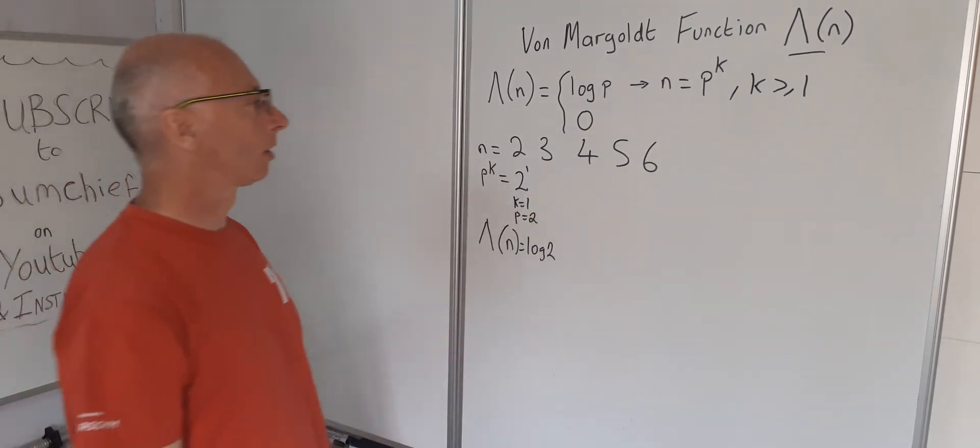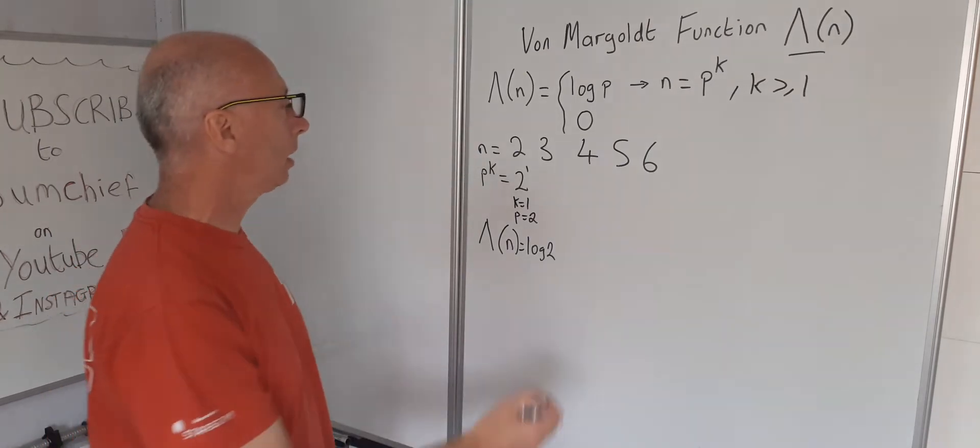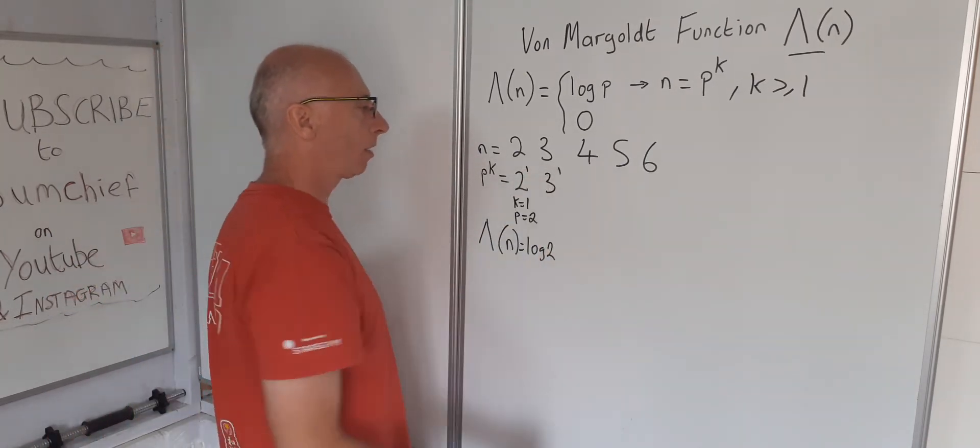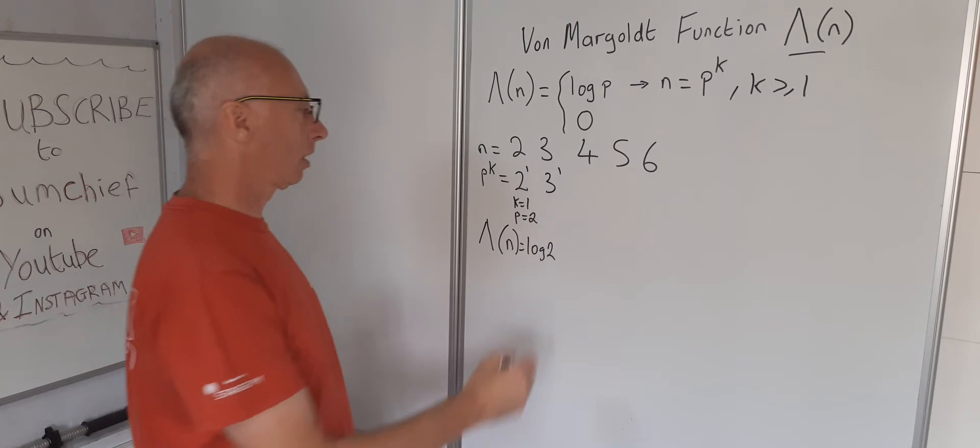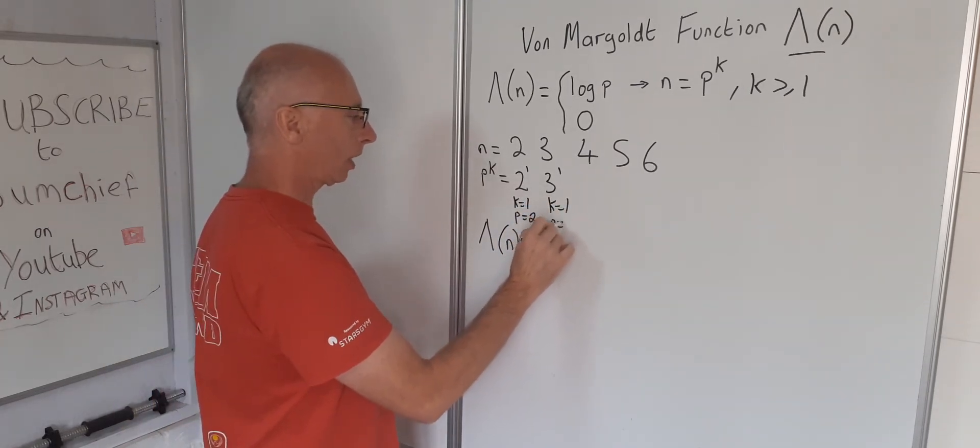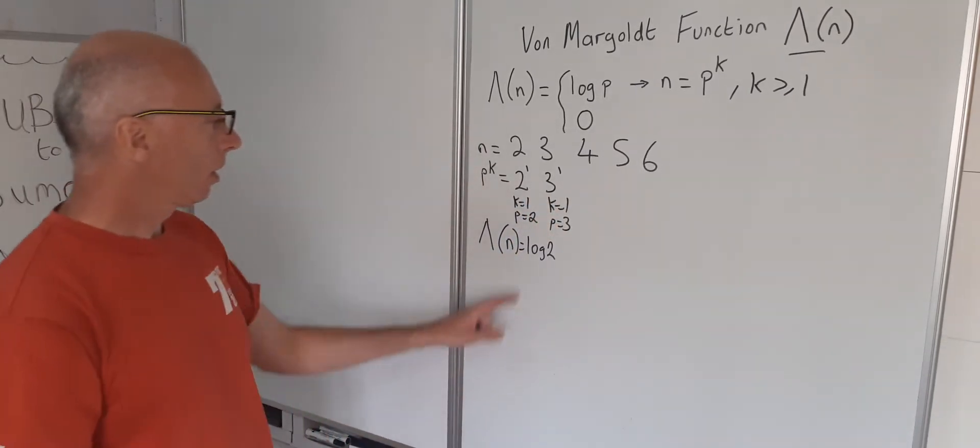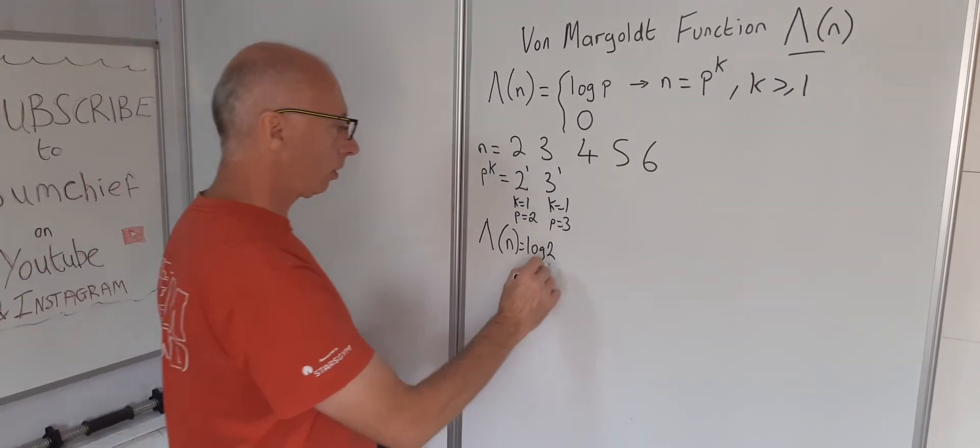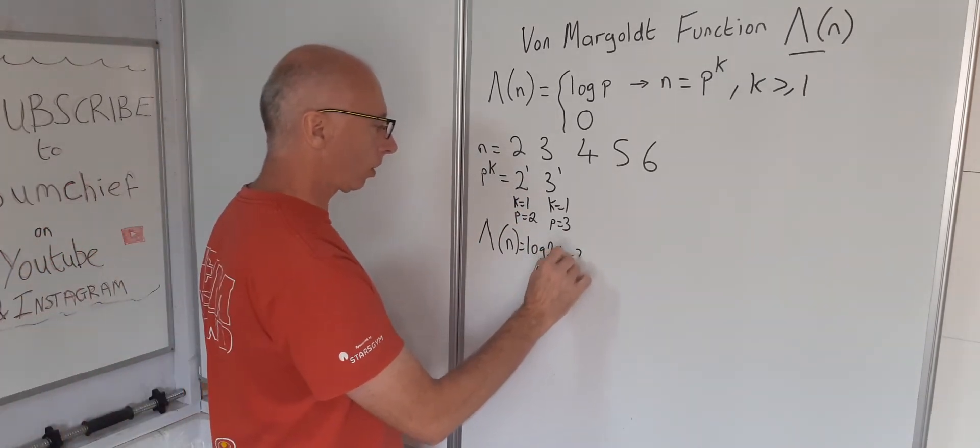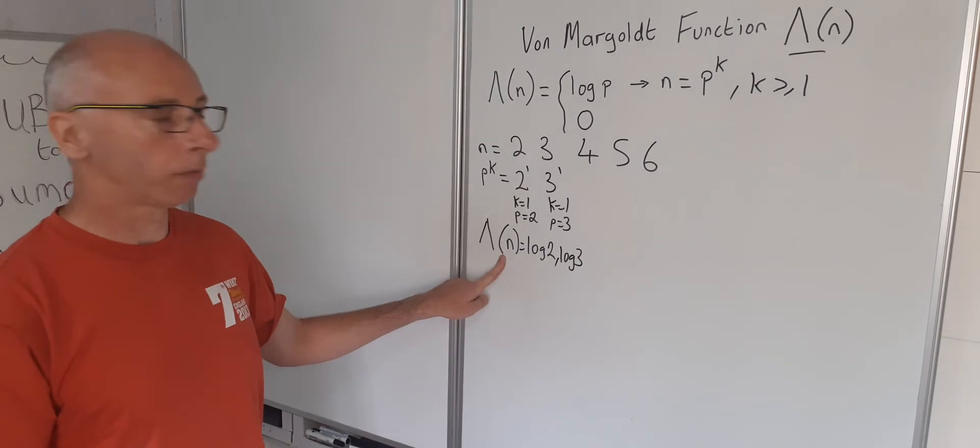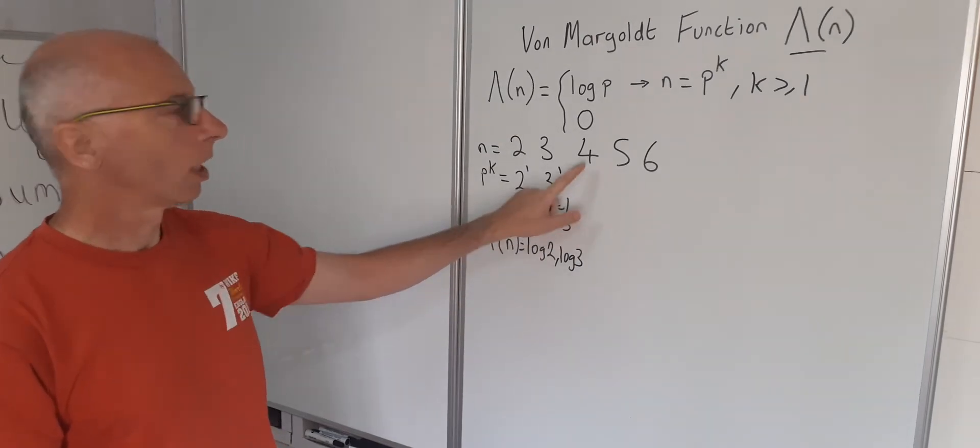So now let's look at three. Well three is a prime number, so three to the power of one. Same as here. K equals one and this time P equals three. So therefore for three we're given log of three is the value of the von Mangoldt Function. Okay.